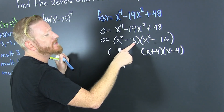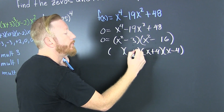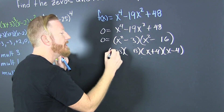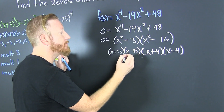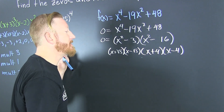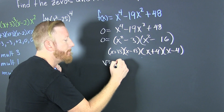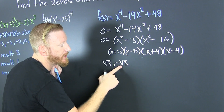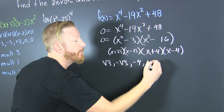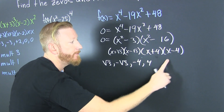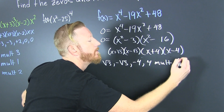This one also factors. What do you square to get that? That's x and √3 — it's a difference of squares, so that's (x + √3)(x - √3). So our zeros are going to be √3, -√3, 4, and -4. All of these are zeros of multiplicity 1.